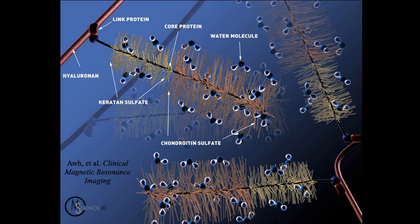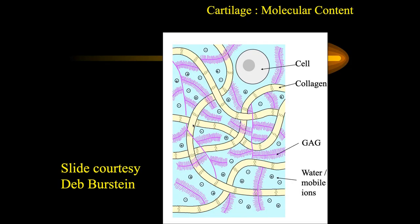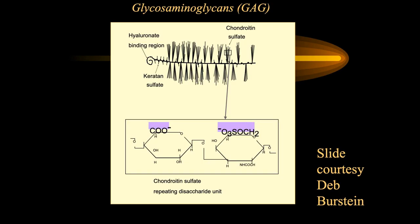A higher-level view shows the hyaluronic acid, keratin sulfate, chondroitin sulfate, and absorbed water molecules. A cartoon from Debbie Bernstein, a researcher at Harvard, shows the same concept. Inside the cartilage are cells important for maintaining the integrity of these molecules — they get broken and the cells repair them. We see the glucosaminoglycans, keratin sulfates, collagen fibers, and biochemical spicules that absorb water molecules.